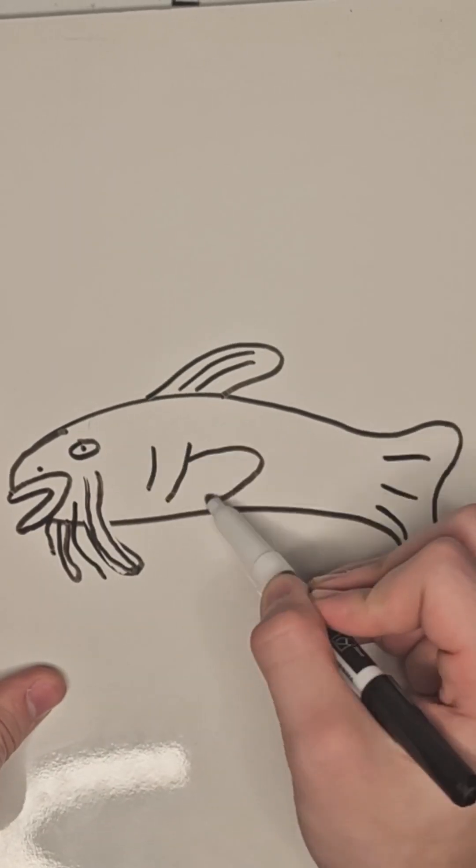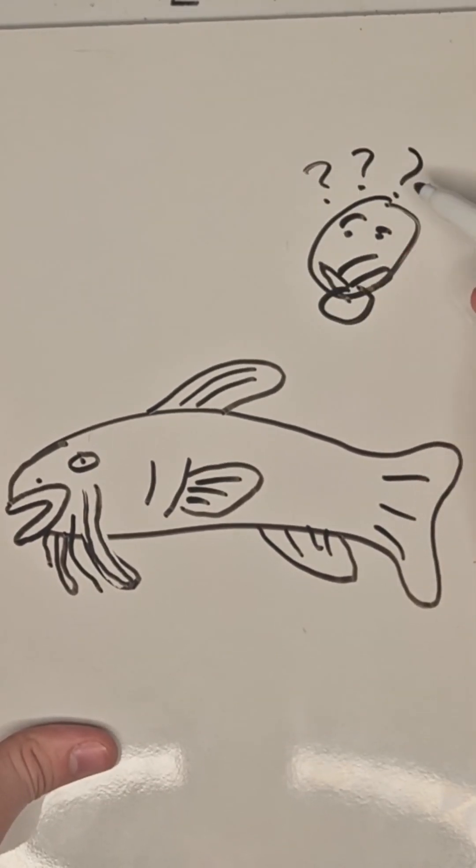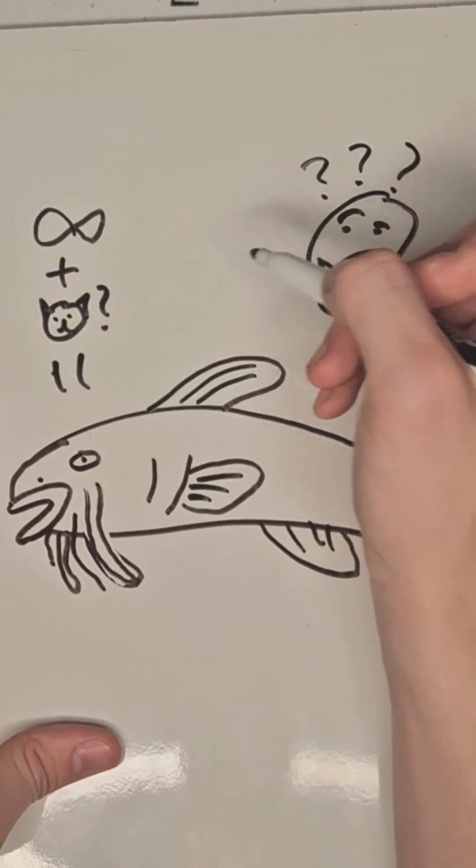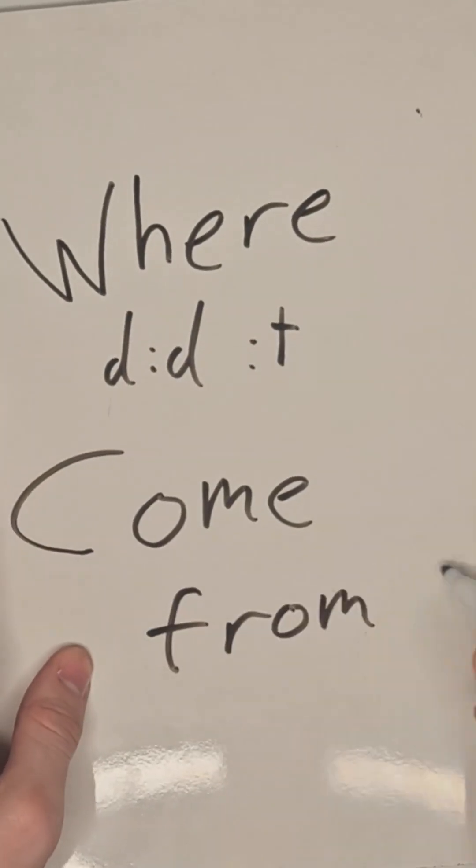Have you ever looked at a catfish and thought, what a weird creature? Why does a fish look kind of like a cat? Really, where did they come from?